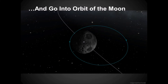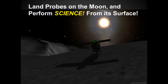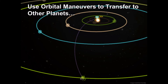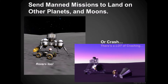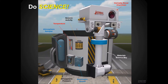It lets you go into orbit around the moon and you can land on the moon and perform science from its surface. You can use those same orbital maneuver procedures to transfer to other planets and explore them with robotics. You can land on planets and moons — or crash. There's a lot of crashing involved. And here's an example of all the different science parts — it allows you to measure temperature, pressure, gravity, and all sorts of things like that.